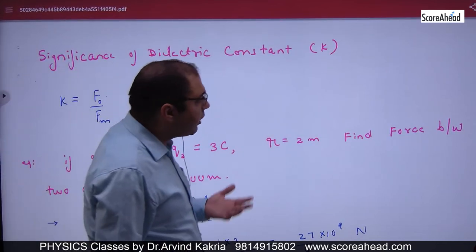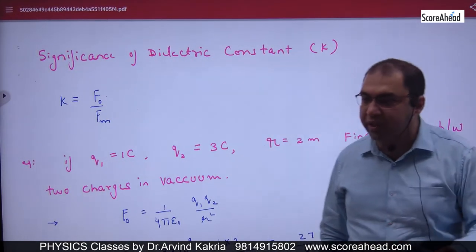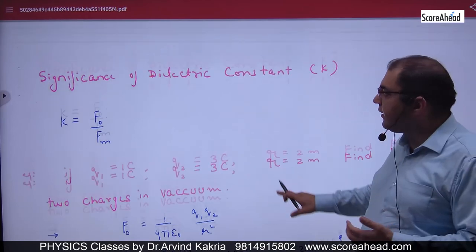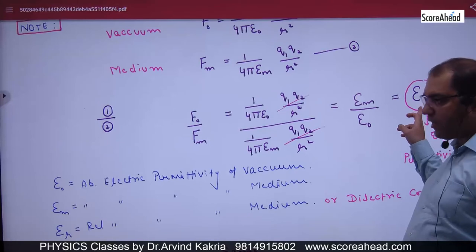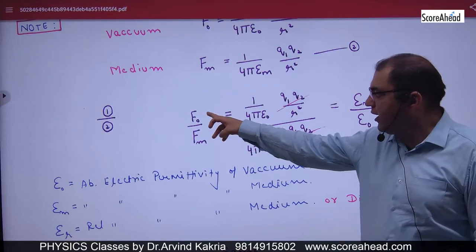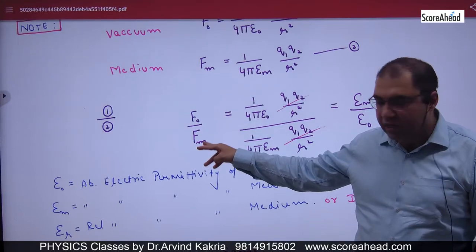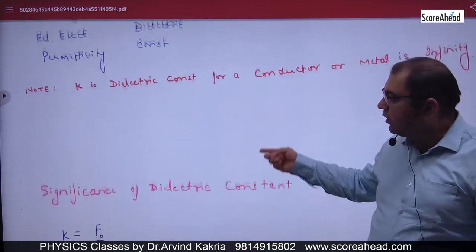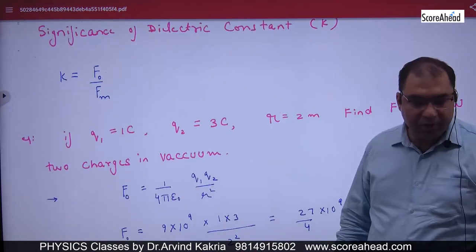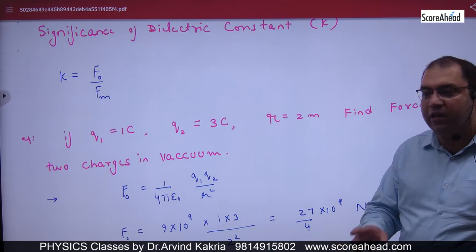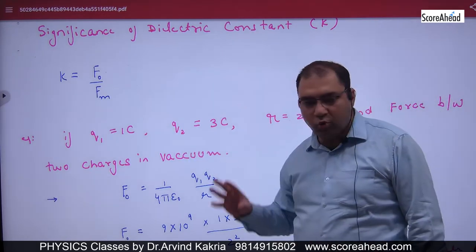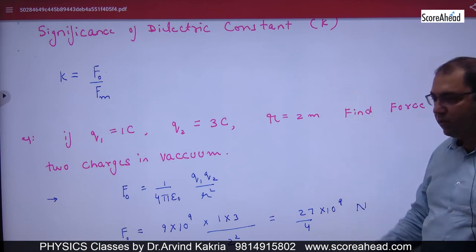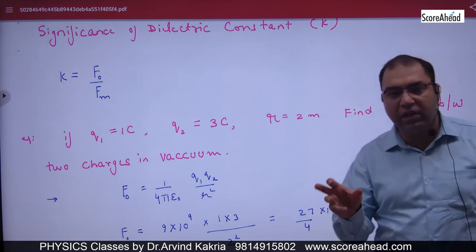Now let's discuss the significance of the dielectric constant. The dielectric constant K equals F₀ divided by F_M — force in vacuum divided by force in medium. For example, in a numerical: Q1 = 1 coulomb, Q2 = 3 coulombs, distance = 2 meters. Calculate the force between charges in vacuum.